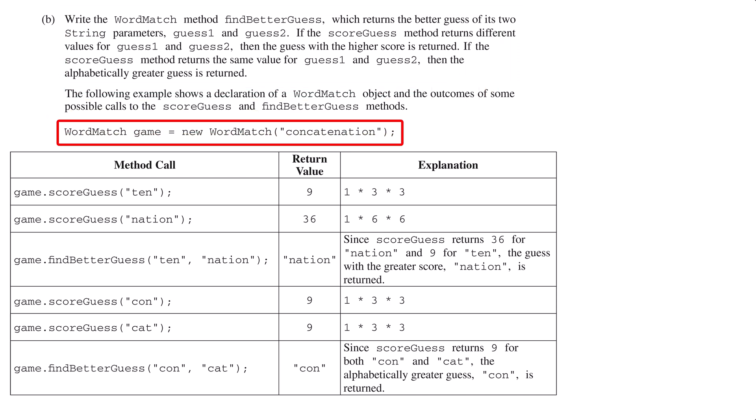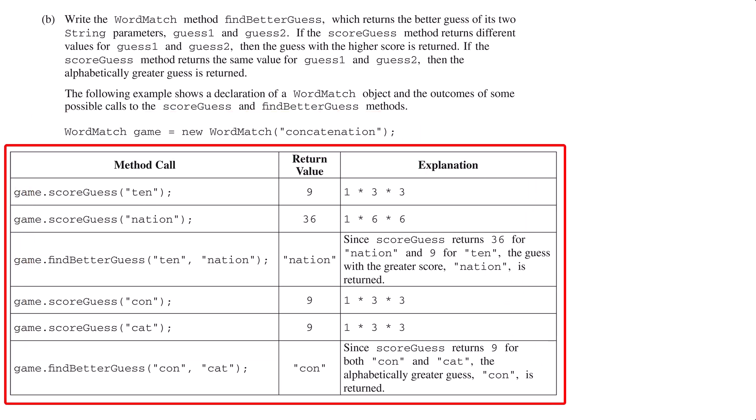It gives one example of creating an instance of the word match class. Then it gives us a corresponding table showing sample calls and returns from both score guess and find better guess. Even if you didn't do part a, for the purpose of part b, you can assume that the method in part a works. In this case, you are expected to use calls to score guess as part of the solution to part b. This is another good opportunity to pause the video and read through the problem.